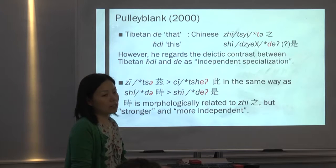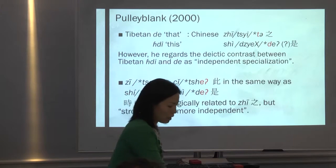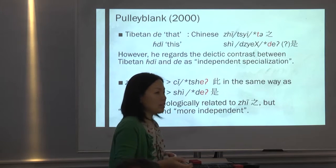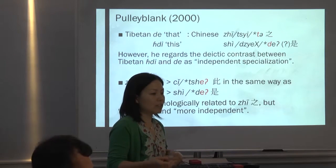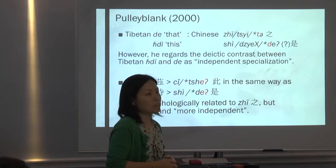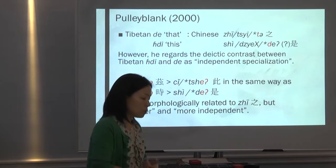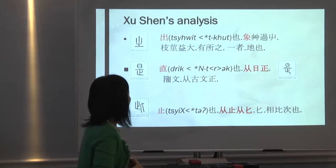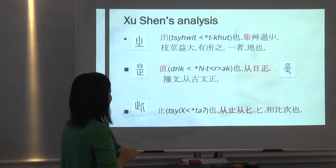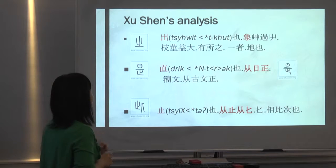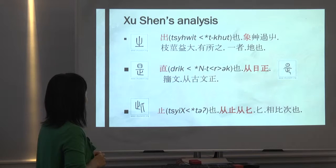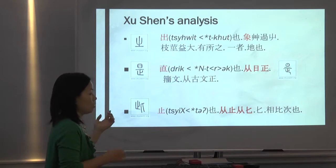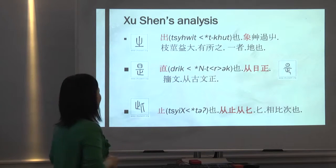In any case, that study is based on classical Chinese. What I would like to explore is what it is like in the non-received texts, more precisely in the oracle bone inscriptions and the bronze inscriptions. If we look at the Shuowen's interpretation of these three graphs — these are the xiao zhuan forms — Xu Shen glosses zhi as chu 'to come out or to go,' shi as zhi 'strength,' and zhi as 'to stop.'